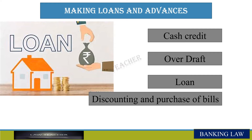The second way is overdraft. This facility may be available to current account holders. Under this facility, the current account holder can withdraw money more than the balance amount in the account. The account holder makes an agreement with the bank for an anticipated certain amount required in a year. Interest is charged only on the amount withdrawn. The limit of overdraft is granted keeping in view the image or credit of the account holder in the market. The main difference between overdraft and cash credit is that overdraft is available only to current account holders while cash credit can be given to any person, and overdraft is given only for a very short period while cash credit is given for a comparatively longer period.